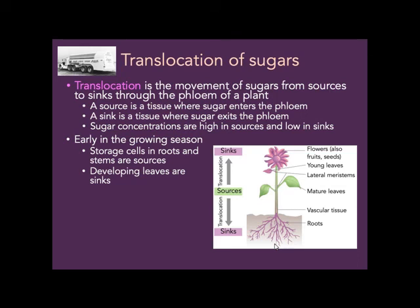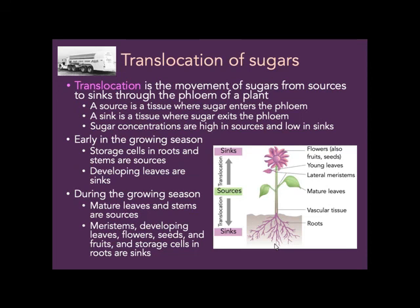The source and sink in the same plant can vary from one part of the season to another. Very early in the growing season, the plant may be just roots storing sugars from the previous year's photosynthesis, with no leaves yet. In that case, storage cells in roots and stems are the sources, supplying sugar to developing leaves. Once leaves grow and begin photosynthesizing, the mature leaves and stems become the source, and meristems, developing leaves, flowers, seeds, fruits, and root storage cells become the sinks.